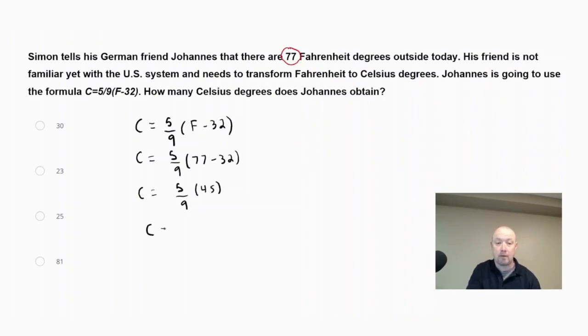So we get 5 ninths and then 77 minus 32 is 45. And then if we solve for C here, 5 ninths of 45 would equal 25. So this would be 25 degrees Celsius. And remember, for all these calculations, you will have a four-function calculator available to you on the test if needed.